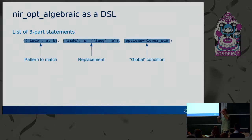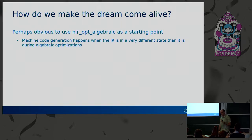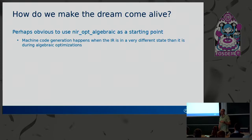After hearing me talk up NIR-OPT algebraic, it's probably not hard to guess where this is going: we can use this existing infrastructure to implement a new 'match this, do that' kind of DSL. But there are still some sticking points. The algebraic optimizations happen while the IR is still in pure SSA form, but when we do code generation, we've come out of SSA form. So there are a lot of assumptions made by the OPT algebraic framework that don't hold anymore.